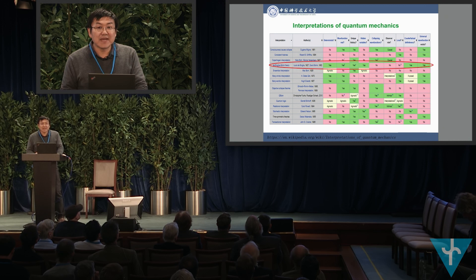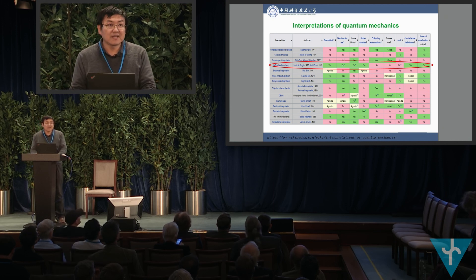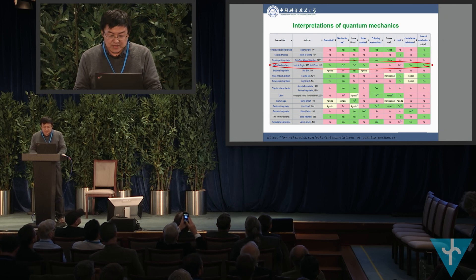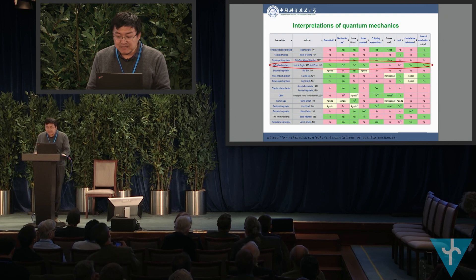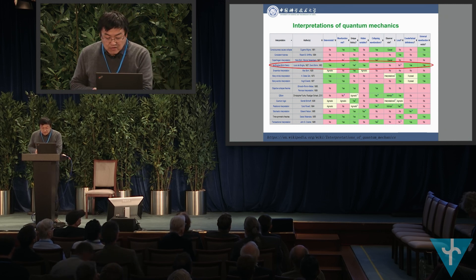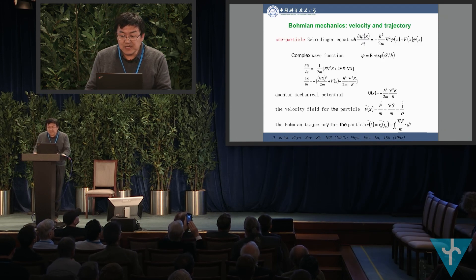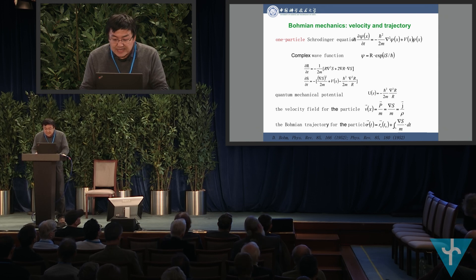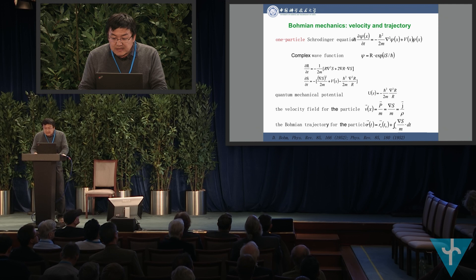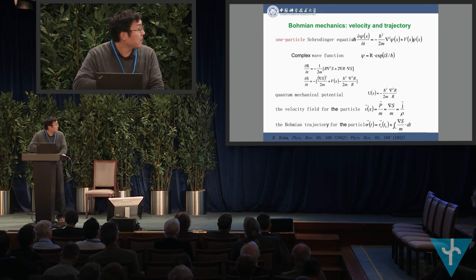Bohmian mechanics is the most famous and best developed hidden variable theory for quantum physics. It postulates the existence of both a quantum wave, which corresponds to the usual quantum wave function, and a particle whose motion is guided by the wave. The exact positions of these particles are the additional hidden variables compared to the usual quantum physical description. From the one-particle Schrödinger equation, by plugging the complex wave function into it, we can derive two new equations: the continuity equation for the probability density ρ, and the equation for S. We can then obtain the quantum mechanical potential, the Bohmian velocity, and the Bohmian trajectory for the particle.